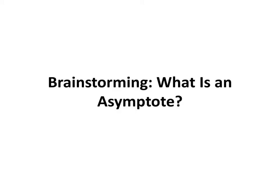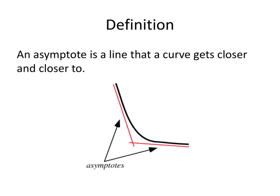In this video, we'll learn about asymptotes, both through definitions and how to determine whether or not a curve has one. So first, let's start with that definition. An asymptote is simply a line that a curve gets closer and closer and closer to.